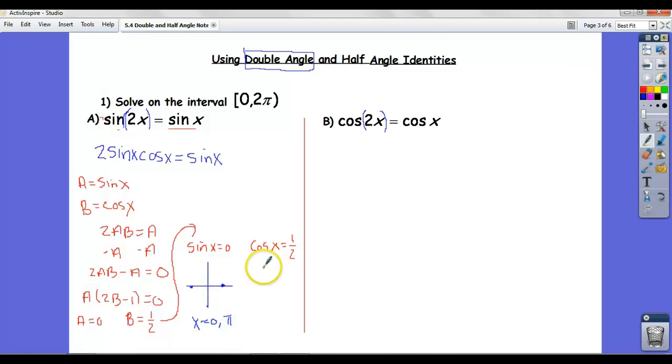Here cosine is 1 half. That's a positive ratio. So that means we're going to have to draw a triangle where cosine is positive which is this quadrant. That would have to be a 1 and that a 2 by the definition of cosine. And then cosine is also positive in quadrant 4 making that a 2 and then a negative root 3. And so the answers are this angle here which is pi over 3 and then this one here which is 5 pi over 3.